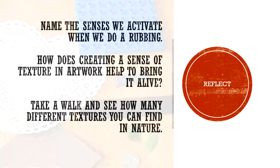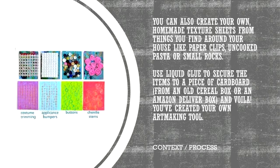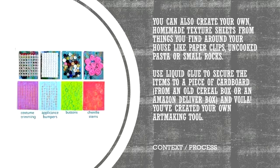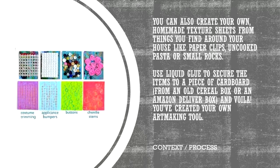Take a walk with your parents and see how many different textures you can find in nature. Another way to extend your learning is by making your own homemade texture sheets from things you find around the house — examples include buttons and paper clips. Find a piece of cardboard, maybe from a delivery box, and glue items down to the top using liquid glue, and you've created your very own homemade rubbing sheet or texture sheet. We do something similar to this in the art room when we make collagraph prints.